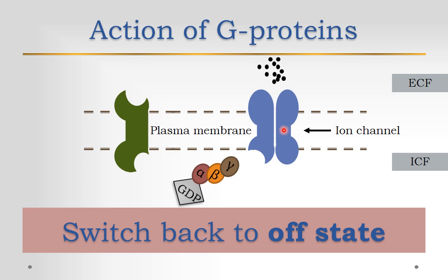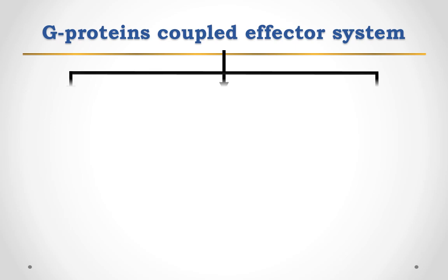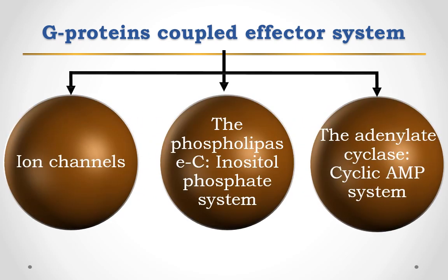When GTP is hydrolyzed to GDP, the resultant alpha-GDP unit dissociates from the effector and reunites with beta and gamma units, completing the cycle and switching back to the off state. The net effect of effector activation or inhibition by the alpha-GTP subunit is the production of second messengers leading to the final cellular response. The first messenger is the agonist itself. Primarily, there are three GTP-coupled receptor systems: one is the ion channel, second is the phospholipase C inositol phosphate system, and the last one is the adenylate cyclase cyclic AMP system.